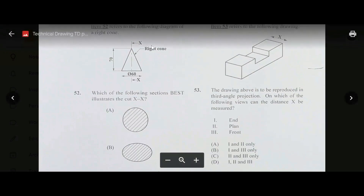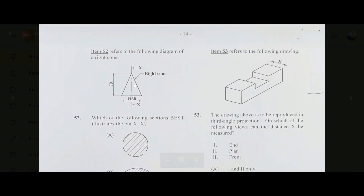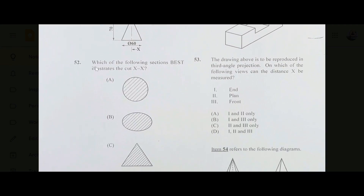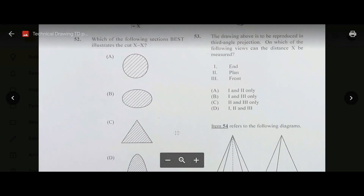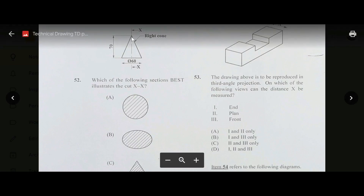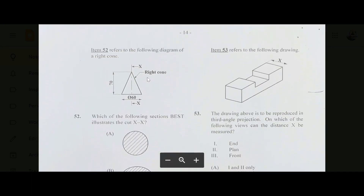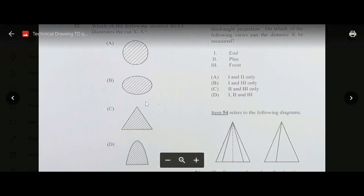Number fifty-two: we have a right cone cut straight down the center along cutting plane XX. Which section best illustrates the cut? It's not A or B. Because it's cut straight down the center, the answer is C. If it were cut diagonally, the answer would be B, but since it's cut straight down the center, the answer is C.